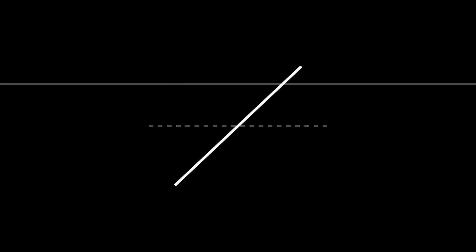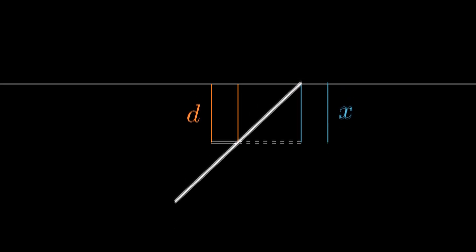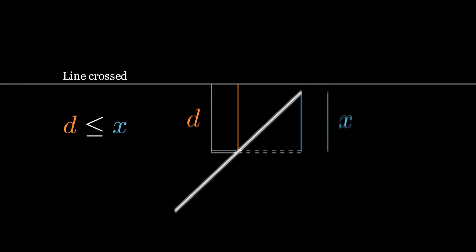Draw a vertical line from the end of the needle to the horizontal. We will define this length as x. Notice that the line is crossed when d is less than or equal to x.